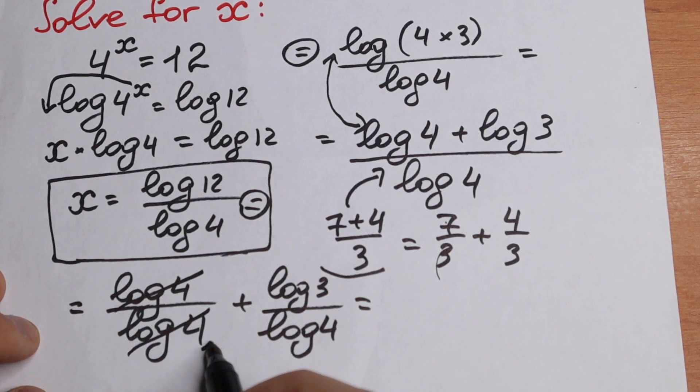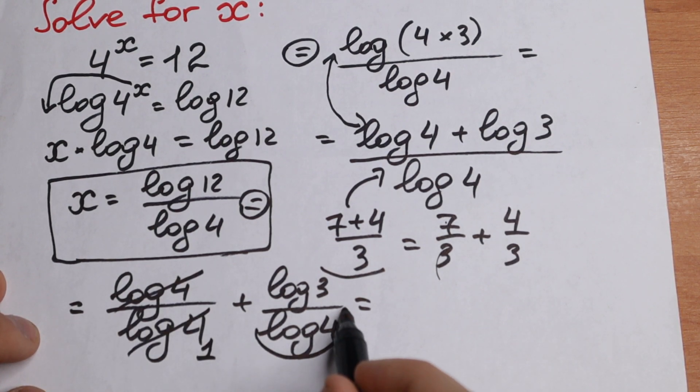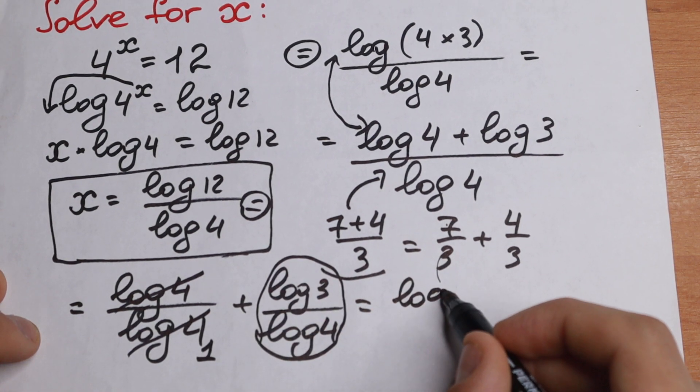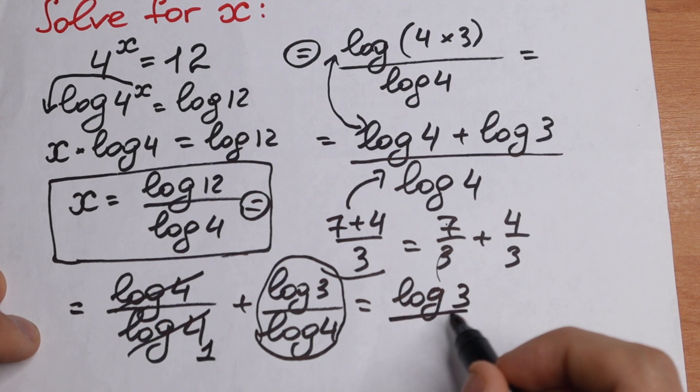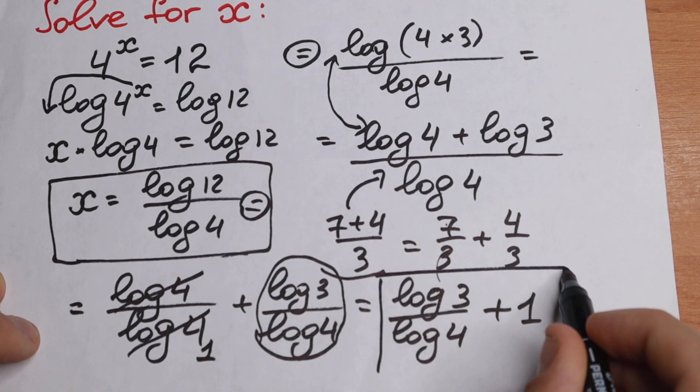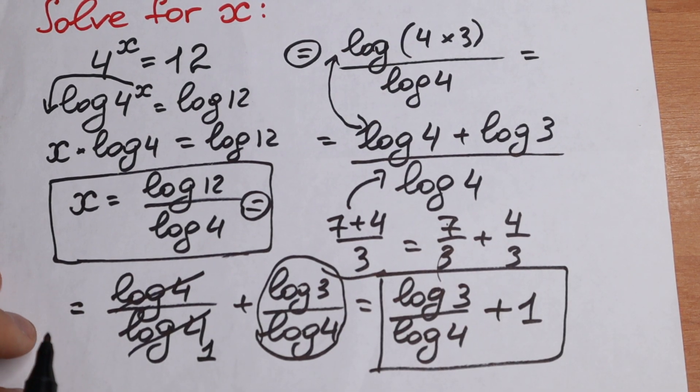We can cancel it and we will have 1. We cannot simplify this more because we don't have any properties to simplify log 3 divided by log 4 plus 1. And this will be our answer.